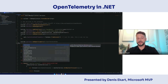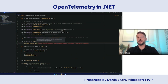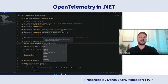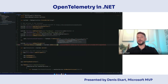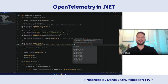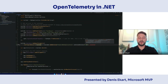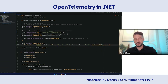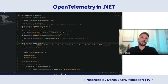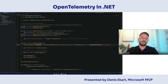The next thing we do is define a resource. A resource is basically our application. We build the resource and say builder.addService, specifying our service is a 'sample web application' with a service version of 1.0.0. We can also specify that we want to include the Telemetry SDK, which is useful to know where the telemetry is actually being generated. So now we've added OpenTelemetry, configured our application name and version, and included OpenTelemetry SDK data.